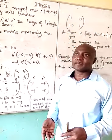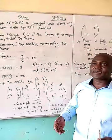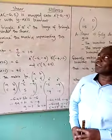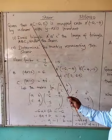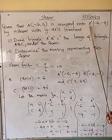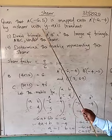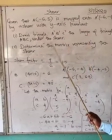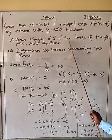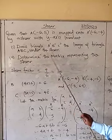What is shear? A shear is a transformation that we always try to stretch the object. For example, we are going to see in the question given: point A is negative 6, 5, is mapped onto A prime, that is 6, negative 4, by a shear with x-axis invariant. Draw triangle A prime, B prime, and C prime, the image of triangle ABC under the shear.